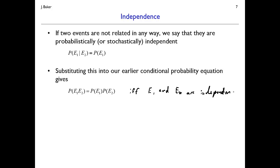One note: it's not uncommon to confuse independence with mutual exclusivity. Colloquially they may sound similar, but mathematically they are quite different. Independence relates to probabilities, while mutual exclusivity relates to shared outcomes between two events. The two concepts are not related, so be careful to keep their definitions distinct. That brings us to the end of the set theory review — hopefully a helpful refresher on basic definitions and concepts.